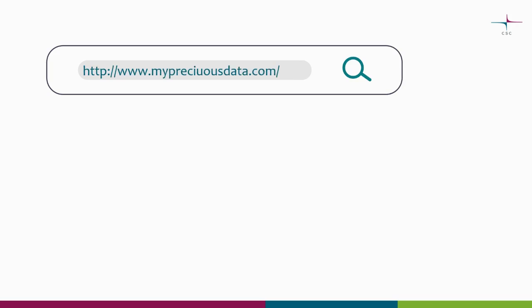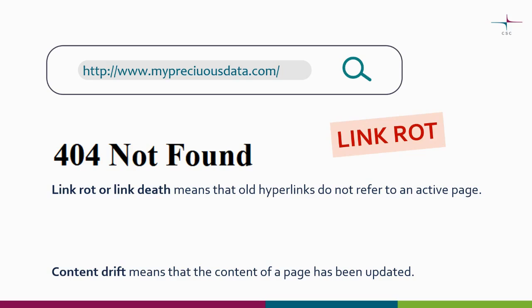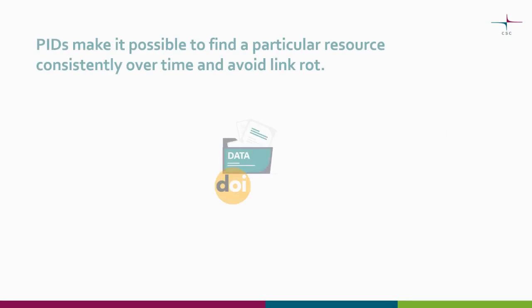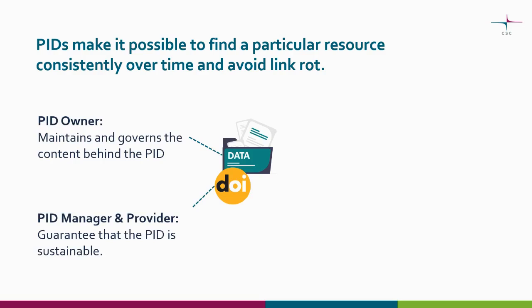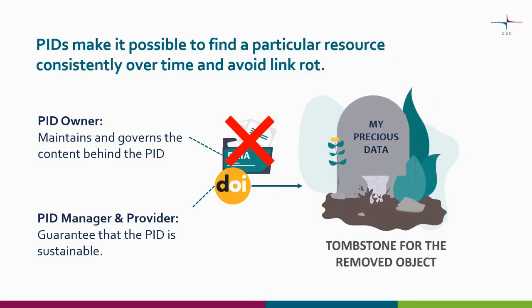Why are PIDs important and so useful? Online resources change over time and ordinary hyperlinks are unreliable when pages are moved or content updated — the latter is called content drift. Link rot or link death means that old hyperlinks do not refer to an active page, which happens when resources like data or metadata are moved or deleted. PIDs make it possible to find a particular resource consistently over time and avoid link rot as well as content drift. The PID owner maintains and governs the content behind the PID, and the PID provider guarantees that the PID is sustainable. Possible changes in the content are documented in the metadata, and if the content behind the PID is removed, a tombstone page must be maintained, which can include a new PID directing to another version of the object.